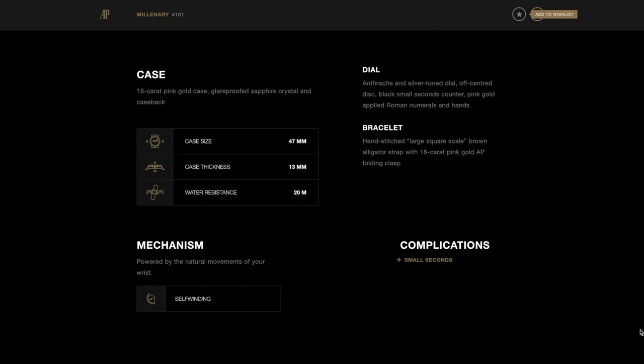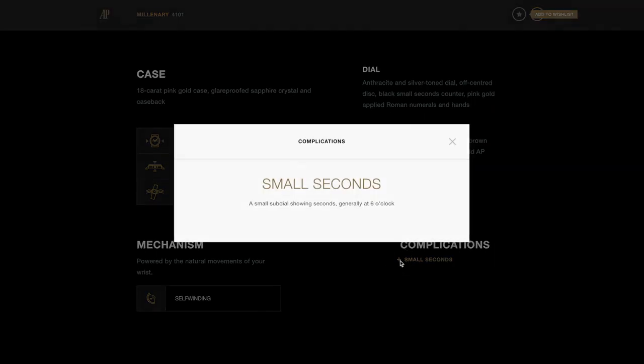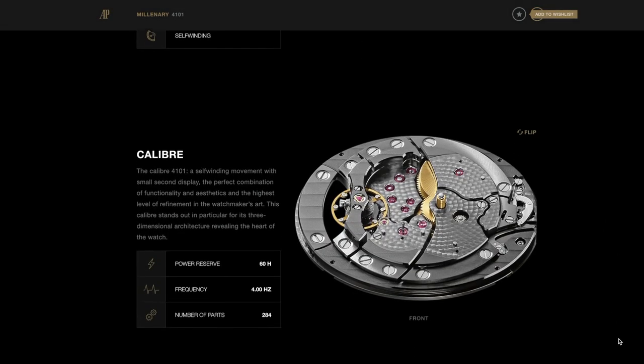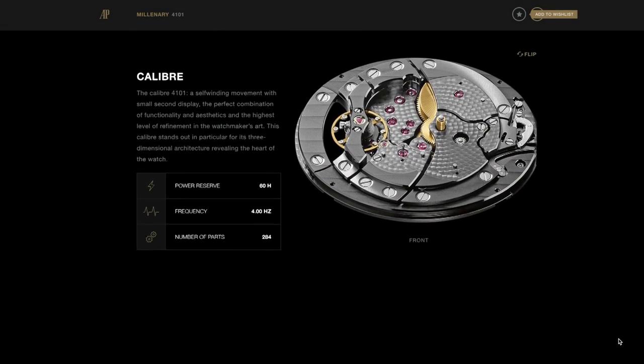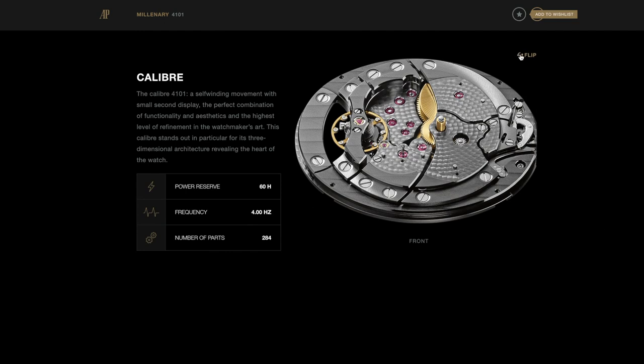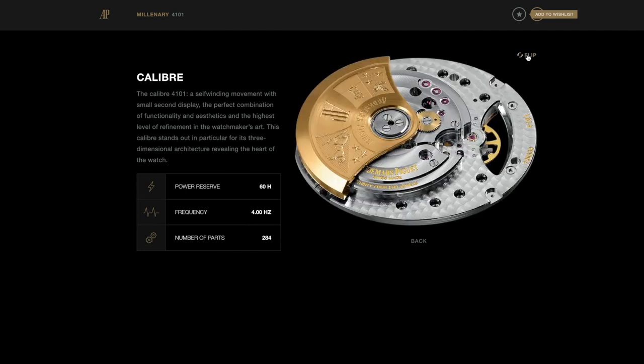Thank you so much for joining me today on Strap a Watch. Audemars Piguet, AP, what an amazing brand. Of course they're one of the big three, and just an amazing brand. They've been around actually since 1875. The name came into existence in 1881.